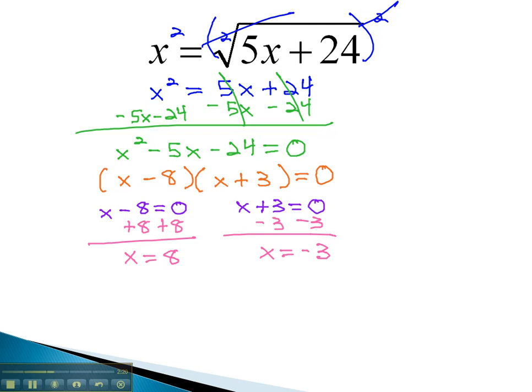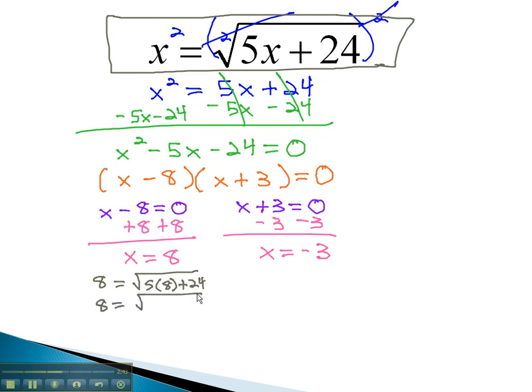However, before we say these are our final answers, we must check both of these equations in the original problem. Let's check the 8 by replacing all the x's with 8. This would give us 8 equals the square root of 5 times 8 plus 24. Following order of operations, 5 times 8 is 40, plus 24. And 40 plus 24 is 64. The square root of 64 is indeed 8. This tells us that x equals 8 does work in the original problem.